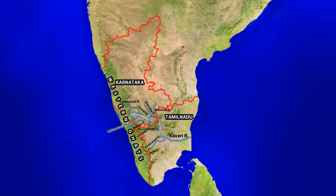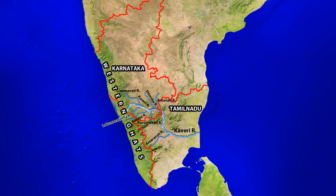The Kaveri originates in the Brahmagiri range of Western Ghats. Its left bank tributaries are the Harangi, Hemavathi, Simsa, Arkavati and Lokpavani, and the right bank tributaries include Lakshman Tirtha, Dakabani, Suvarnavathi, Bhavani and Amravathi. Flowing from Tal Kaveri in Madikeri district of Karnataka, it passes through south interior Karnataka and enters southern Tamil Nadu. It drains into the Bay of Bengal passing through Nagapattinam district.